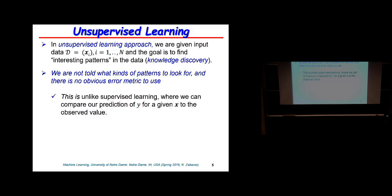In unsupervised learning, the only thing I give you is the x's, and what you need to do is use the x's to learn some patterns in the data. If the data come from different sources — say many Gaussians — but I don't tell you that, can you discover from where the data came from? This is an unsupervised learning problem. You have to deal with knowledge discovery in the data without any labels to compare things. There's no loss function because I haven't given you any y. In some ways, unsupervised learning is more difficult.